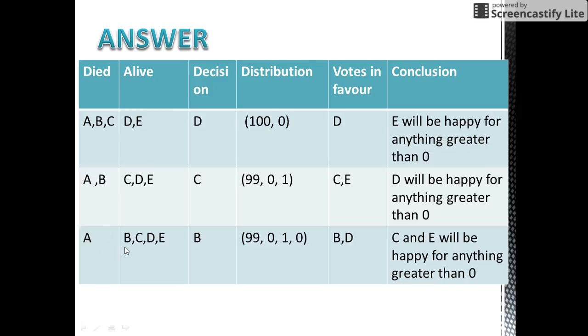Now suppose B proposes a plan and D would support his proposal, so the plan proposed by B would pass. Now B would try to maximize the number of coins that he himself can get, keeping in mind that D gets the minimum number of coins, that is 1, so that D supports his proposal and his proposal passes.